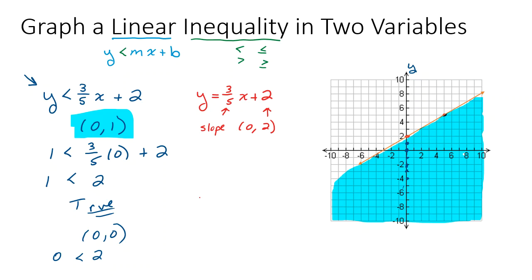Let's say I test a point up here — the point (5, 8). If I plug that into my inequality, I put 8 in for y and 5 in for x. If you work this out, those 5s cancel and you get the statement 8 is less than 5. That's false, so that's not a solution. Every point above this line is not a solution to the inequality, and every point below the line is a solution.